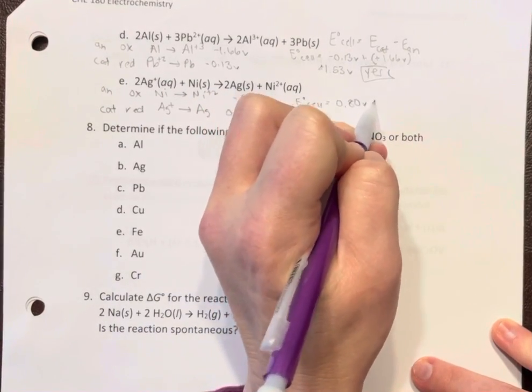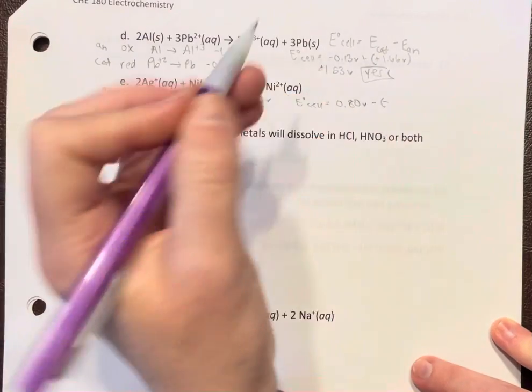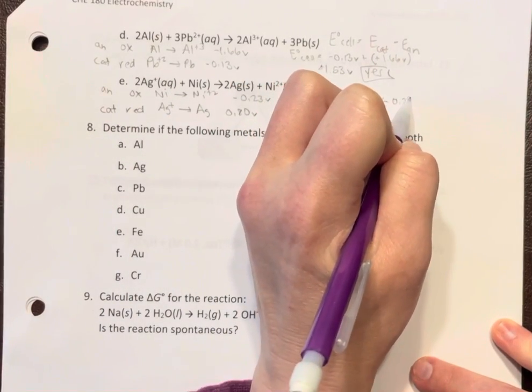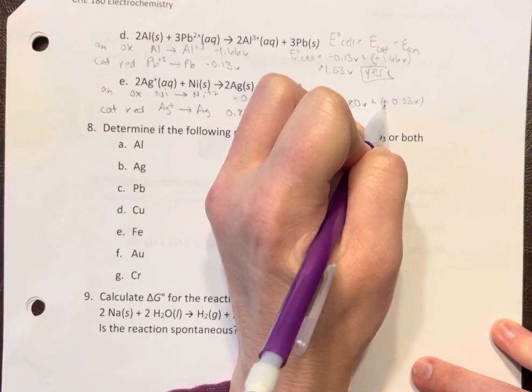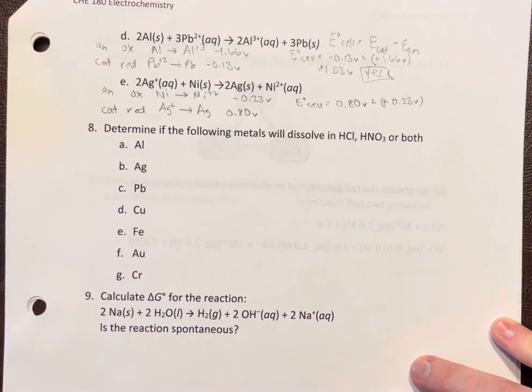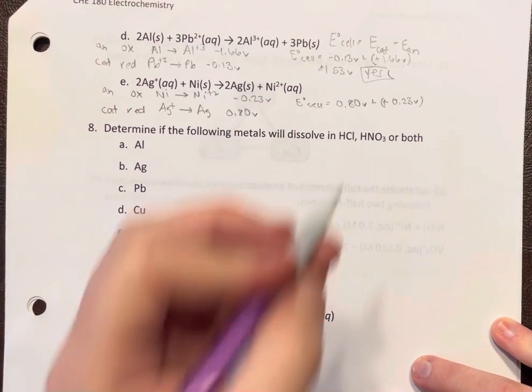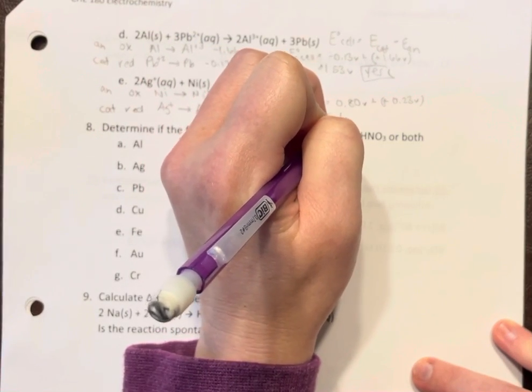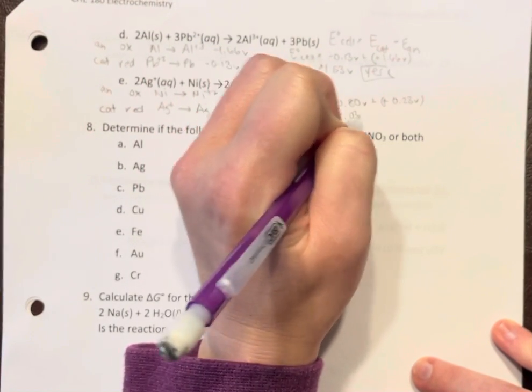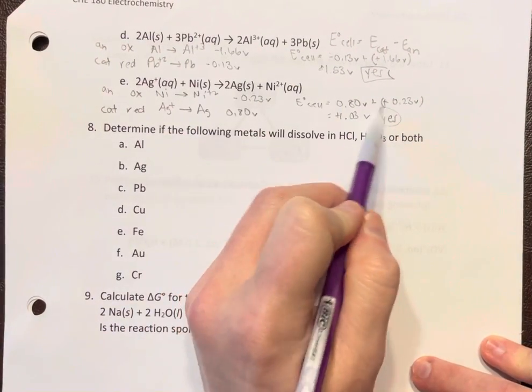And remember on the table everything is compared to the arbitrary standard hydrogen electrode which I call the SHE. So we do that, let's see: 1.03 positive, so yes that is also spontaneous.